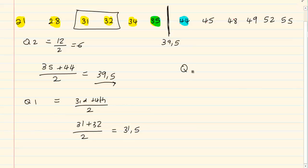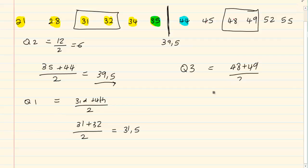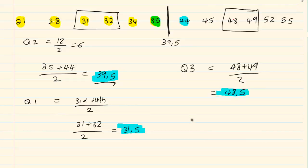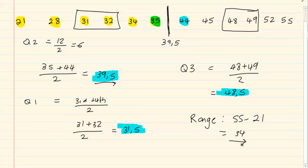And for Q3, I take the 3rd and 4th terms on the right-hand side after Q2, so it is 48 plus 49 divided by 2, which is 48.5. So my Q1 is 31.5, my Q2 is 39.5, and my Q3 is 48.5. And for the range, it is 55 minus 21, which is equal to 34. So my range is equal to 34.